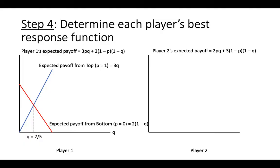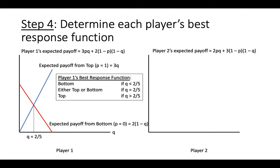From this information, we can determine player 1's best response function. If q is less than 2 fifths, then player 1's expected payoff is higher from playing bottom. So that is their best response if player 2 plays left with any probability less than 2 fifths.